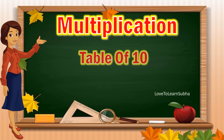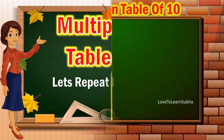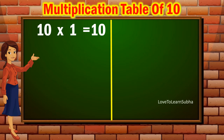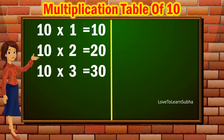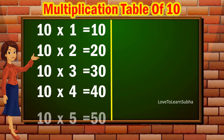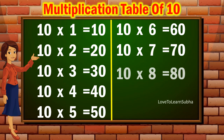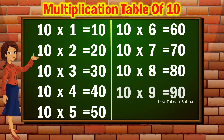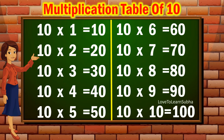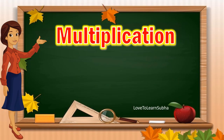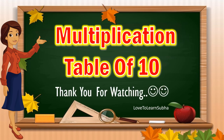Now let's repeat it once again. Ten ones are ten, ten twos are twenty, ten threes are thirty, ten fours are forty, ten fives are fifty, ten sixes are sixty, ten sevens are seventy, ten eights are eighty, ten nines are ninety, ten tens are a hundred. I hope you enjoyed learning about the multiplication table of ten.